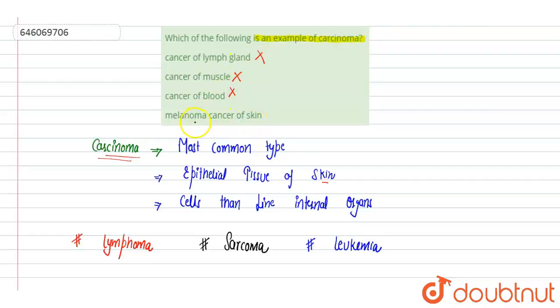And next is melanoma, cancer of skin. Melanoma affects the melanocytes. There is abnormal growth of skin cells, and it affects the epithelial tissue of the skin. So it is one of the most common types of cancer and it is a carcinoma. It means option D is correct. Hope you get it, thank you.